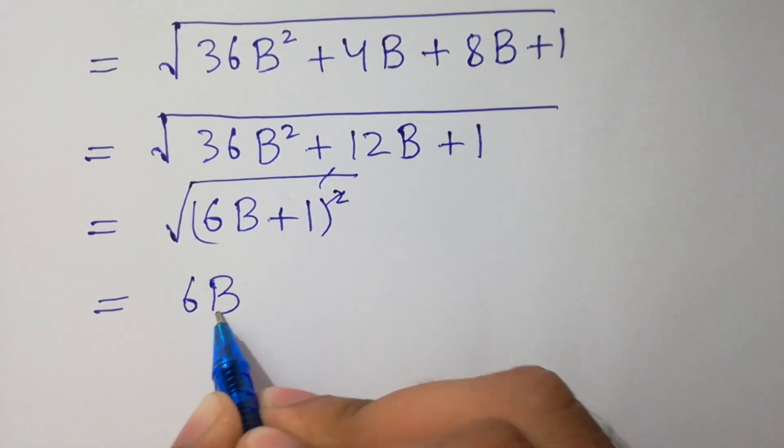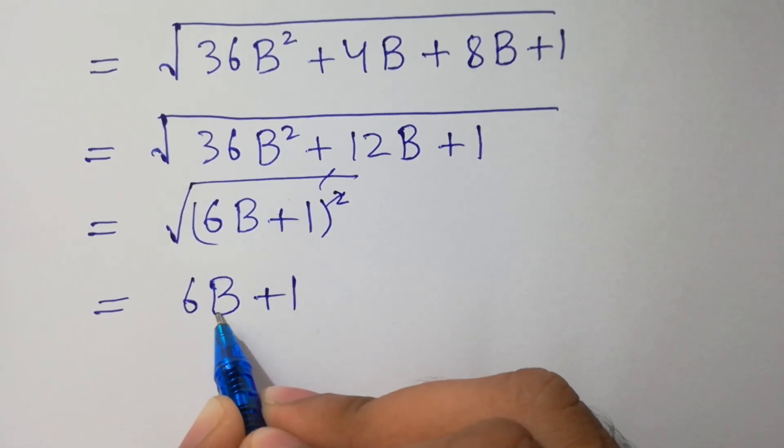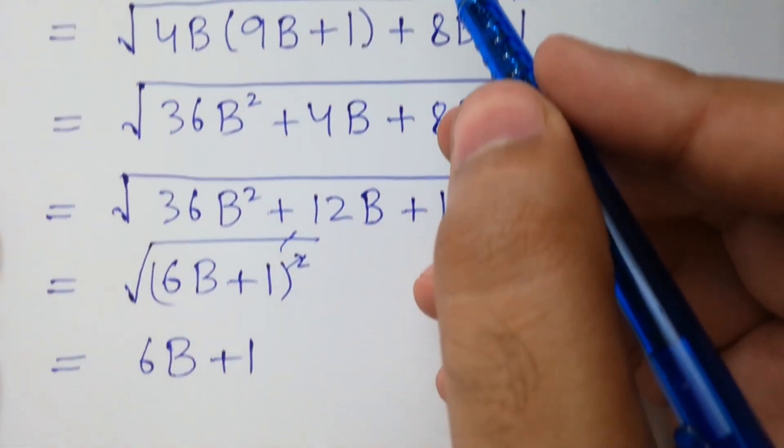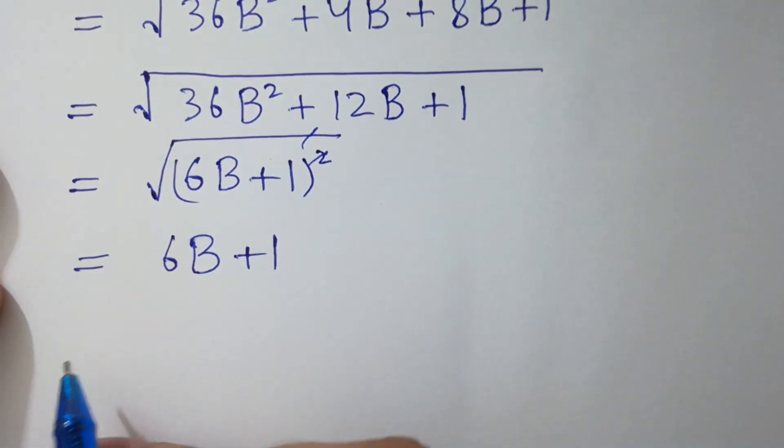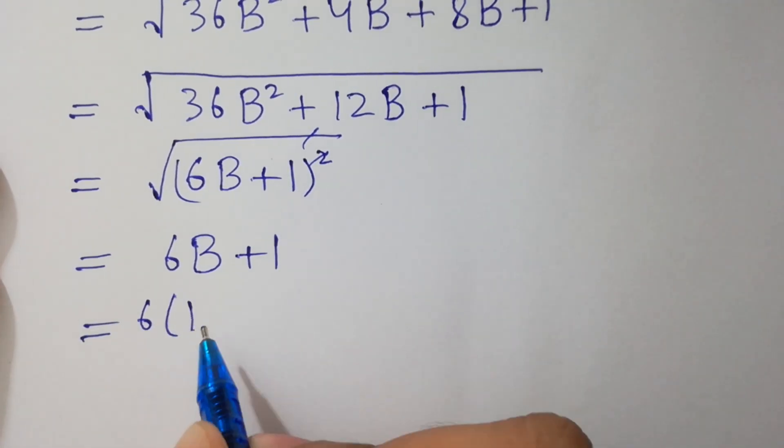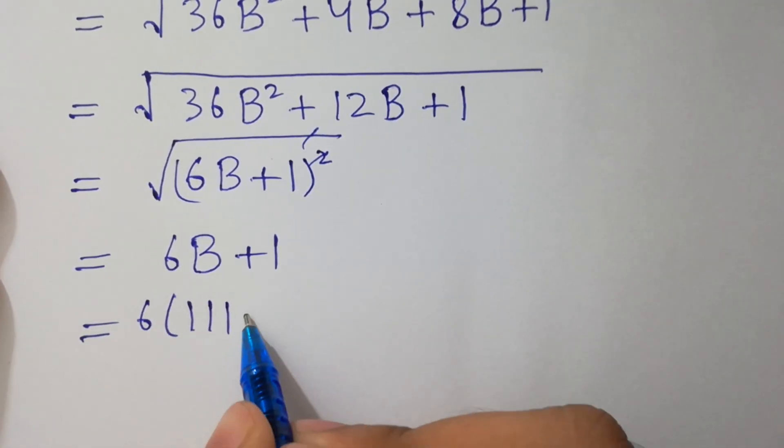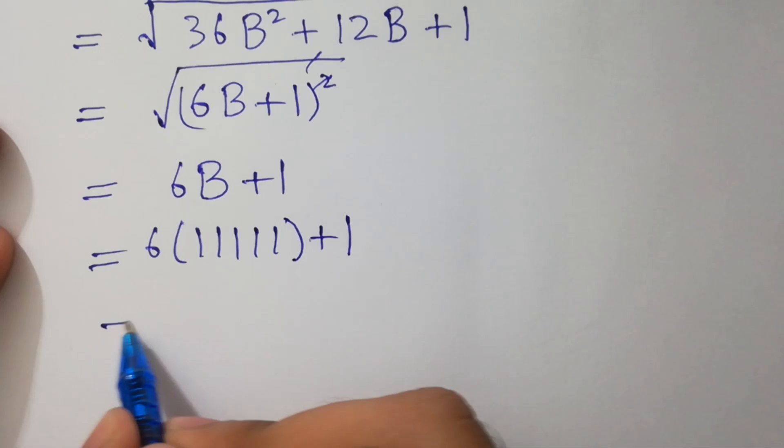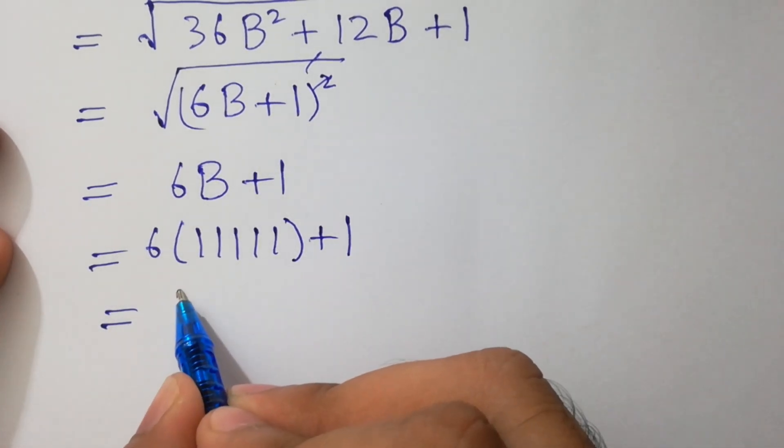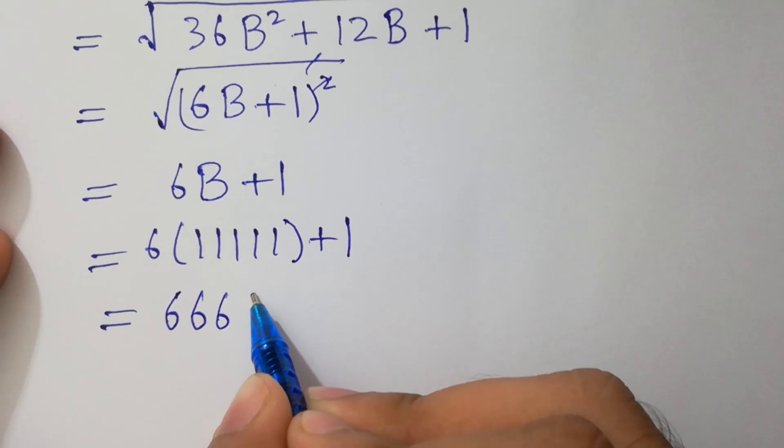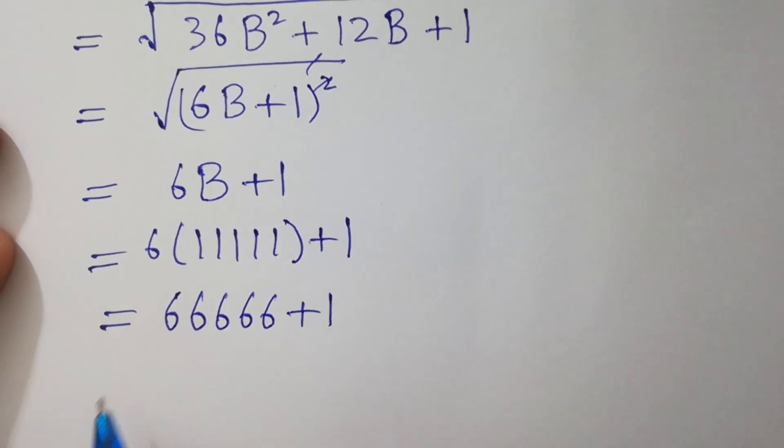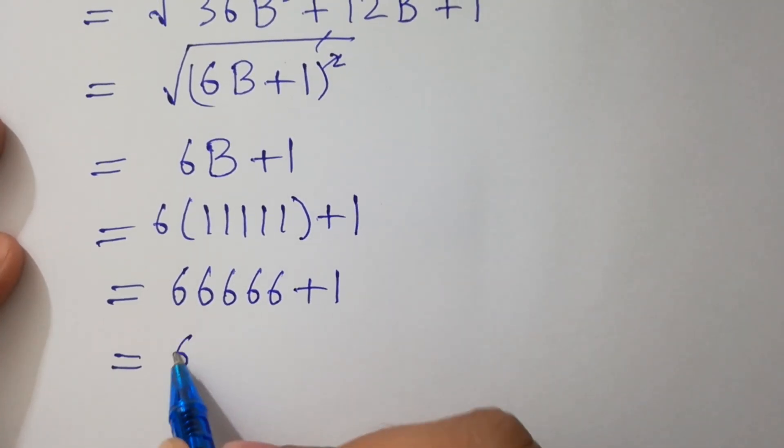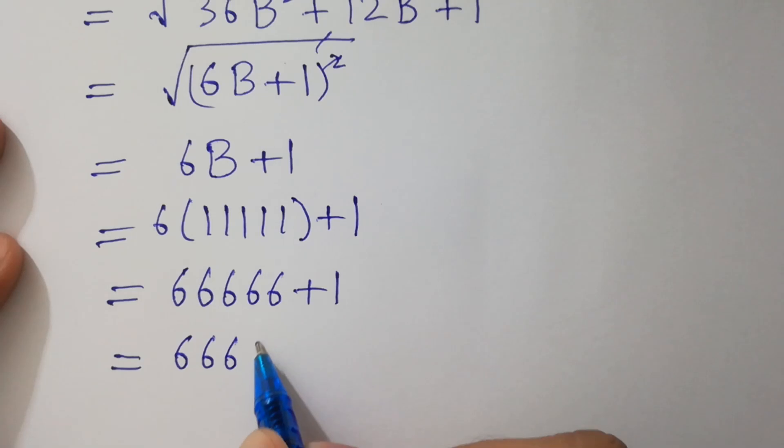Since B equals 5 times 11111, we can put here 6 times 11111 plus 1, equals to 66667, which is our correct answer.